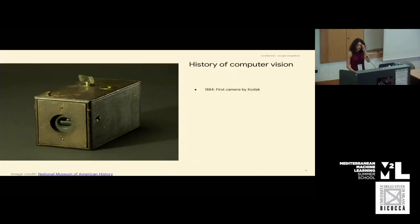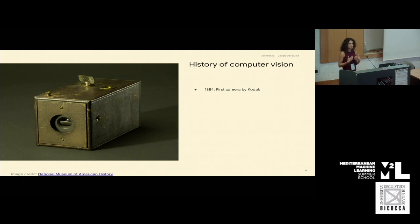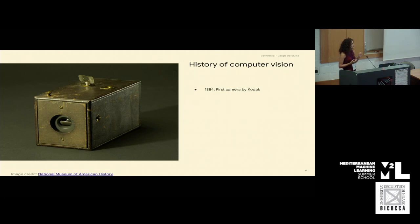I'd like to talk a bit about the history of computer vision, which I think started with the first digital camera, because the first camera actually made images computationally possible to process. The first commercially available one was produced by Kodak, with the slogan 'you press the button, and we do the rest.' It was available for the public, and I think that's where everything began.